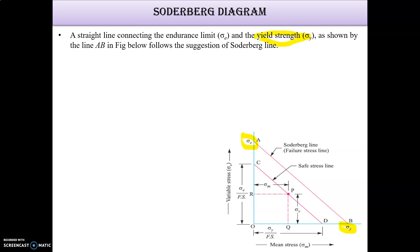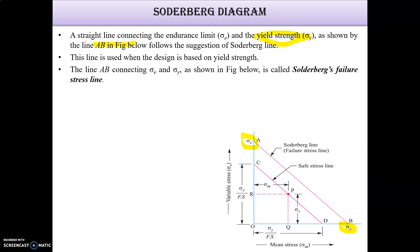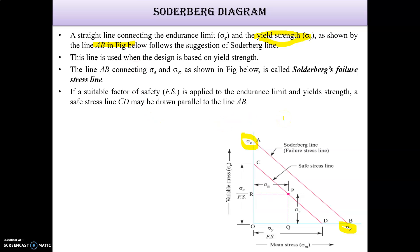By joining point A (at Sigma E on the y-axis) and point B (at Sigma Y on the x-axis), we get a line AB. This line is used when the design is based on yield strength. If yield strength is the criterion, the Soderberg diagram is used, and this line AB is the failure line.